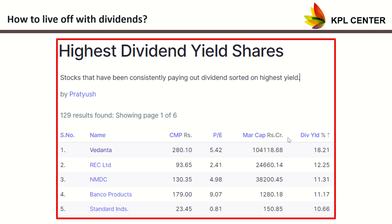The dividend yield shown is 18.21%. RE is 12.25%, NMDC is 11.3%, Bancorp Products is 11.1%, Standard Industries is 10.66%. The dividend yield range is around 5–6% at the lower end, going up depending on the stock. In standard terms, 10% is a high yield. When we evaluate, we look for around 5% as a good dividend yield threshold.